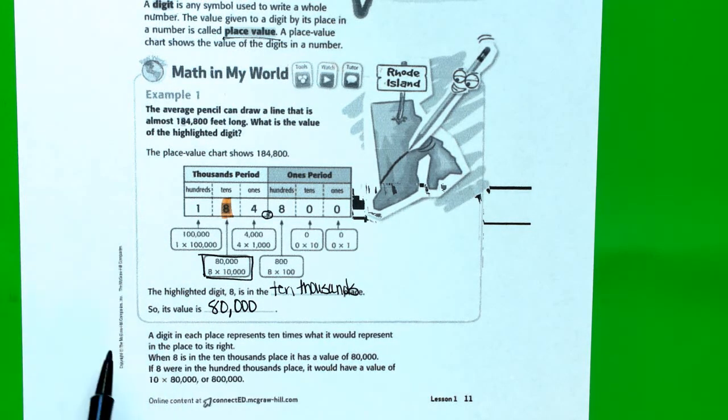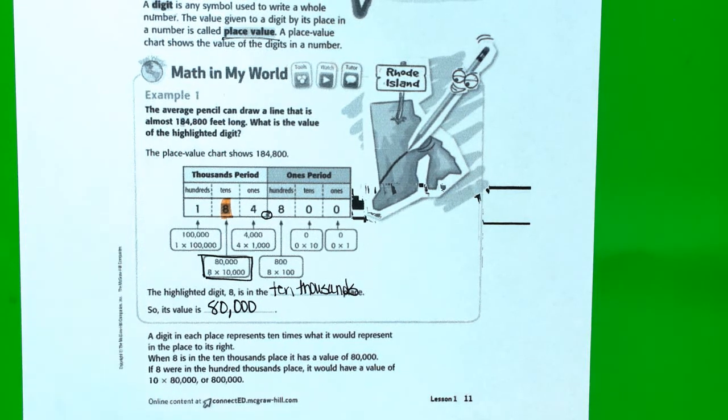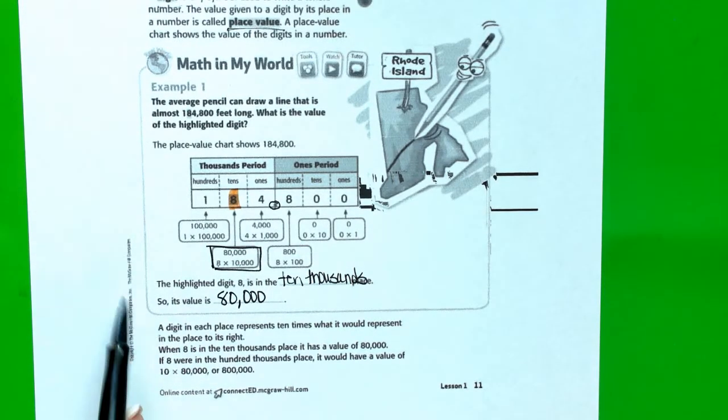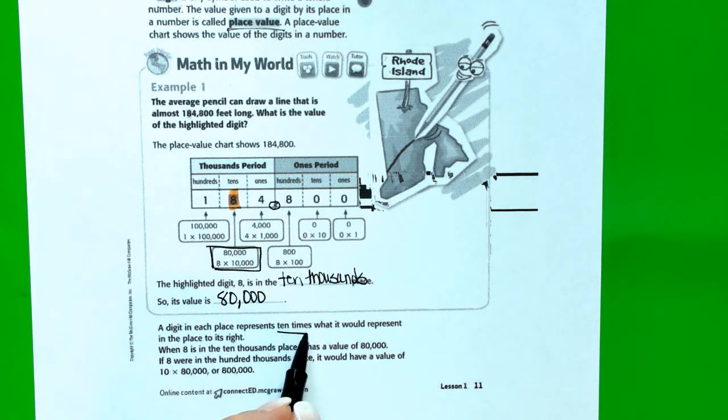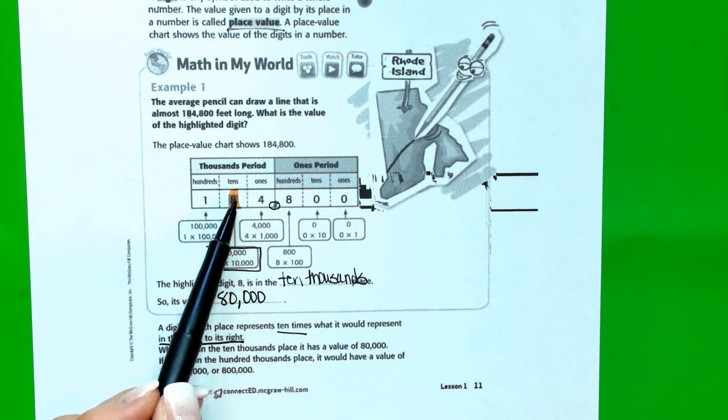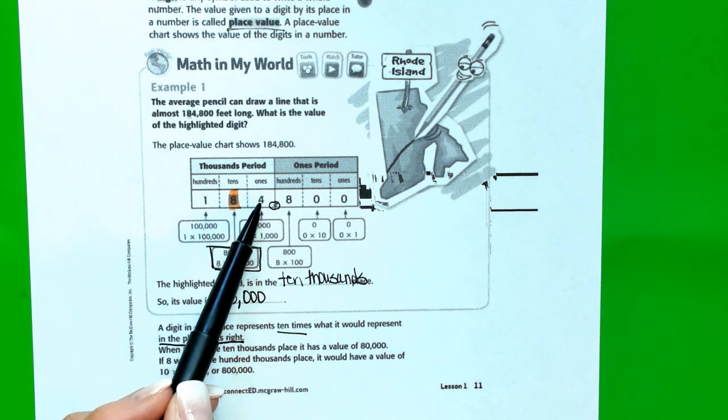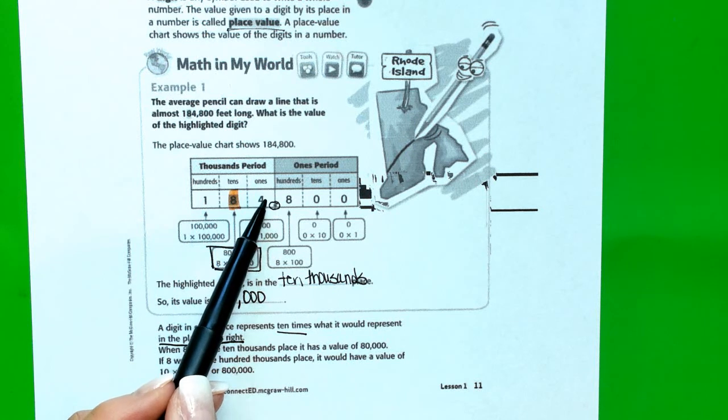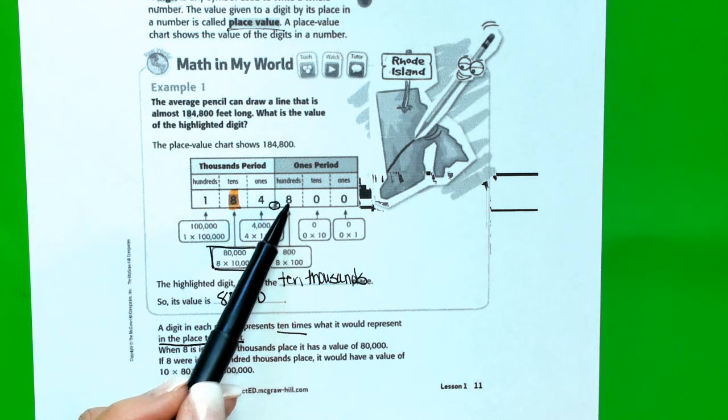So let's not skip the stuff at the bottom. It says a digit in each place represents 10 times what it would represent in the place to its right. So what they're saying is that the digit that's here is 10 times more than the digit that was there, assuming they were all the same number.